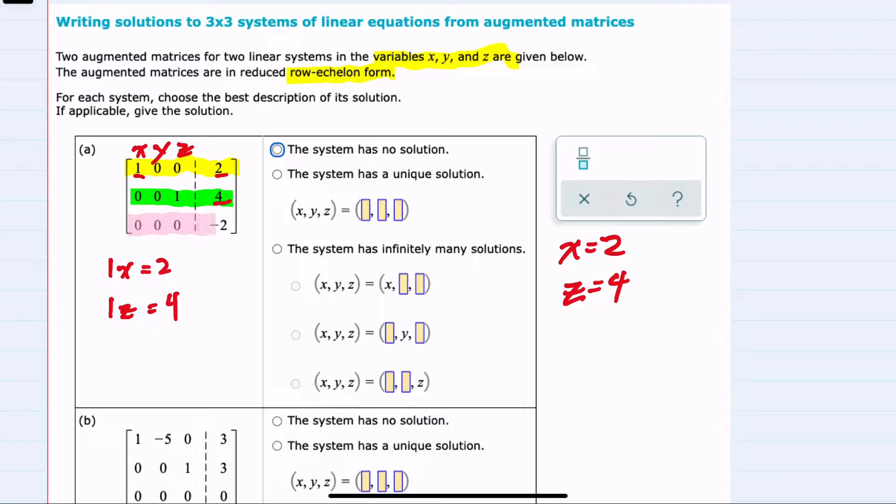The third row is where things get interesting, because all of the variables have been zeroed out. So we have 0x, 0y, 0z, but equals a negative 2.